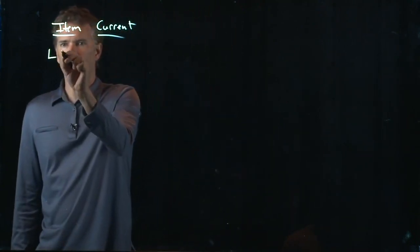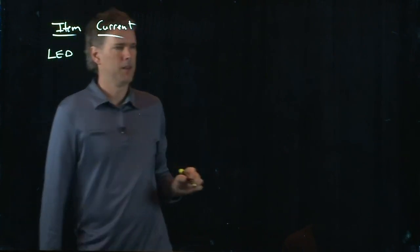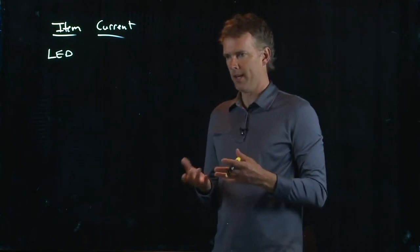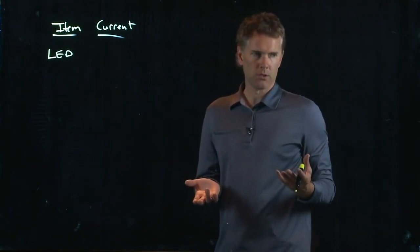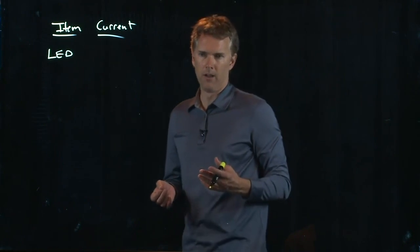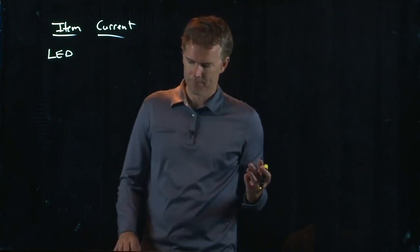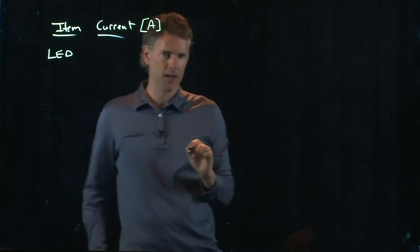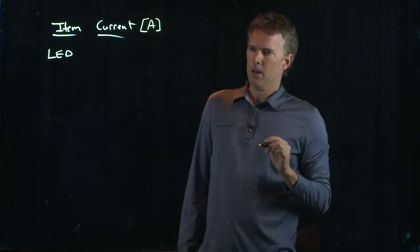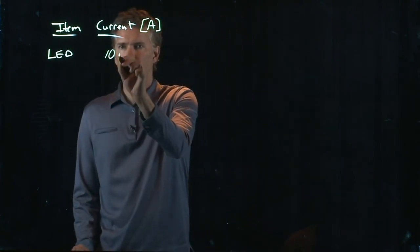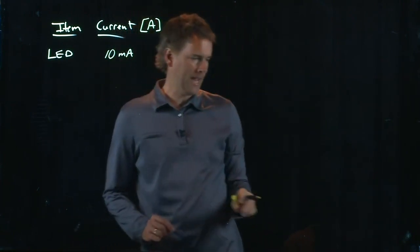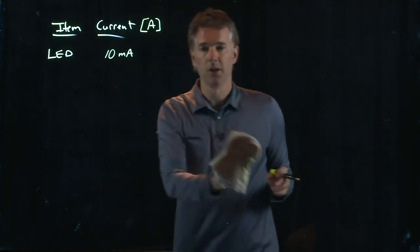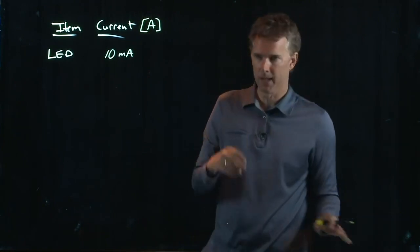So let's say I have an LED. If I turn on just a little red LED, green LED, how much current does it draw? Any ideas? We're talking about in the scale of amps, right? That's our SI unit. Well, it turns out an LED draws somewhere around 10 milliamps. There's kind of a wide scale, but this is a typical number for an LED, 10 milliamps.